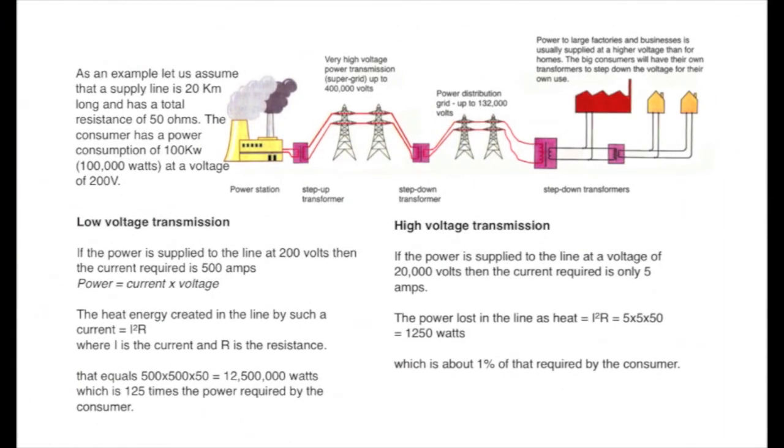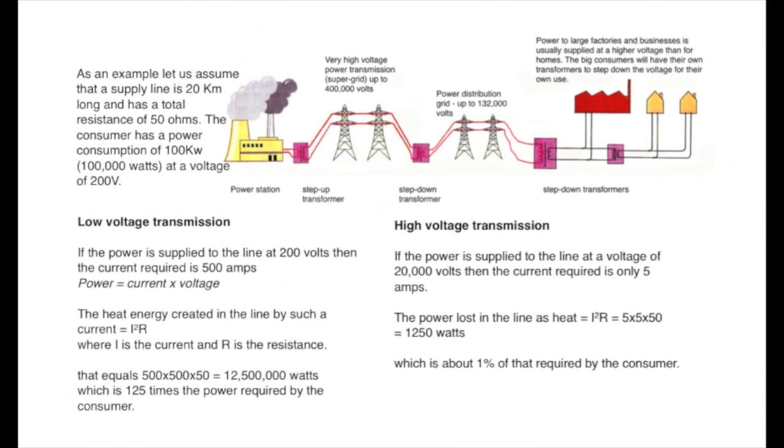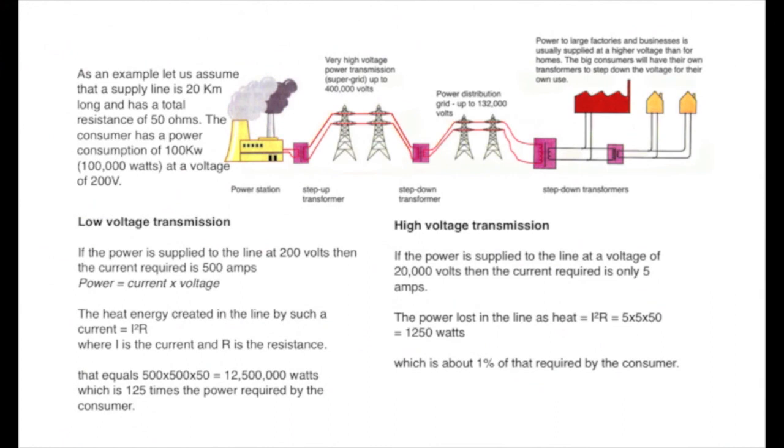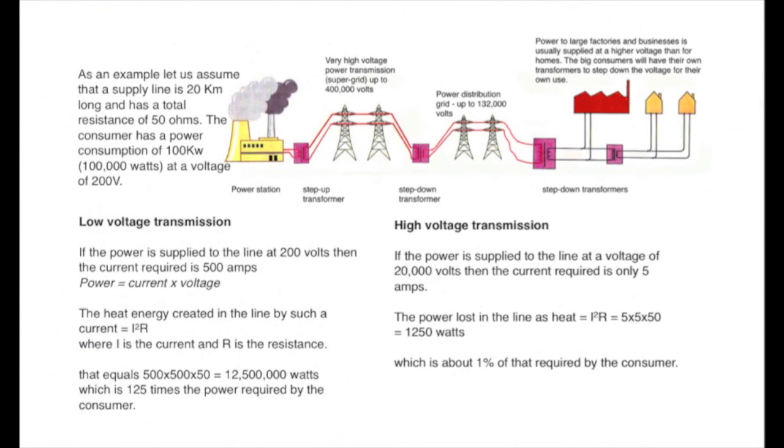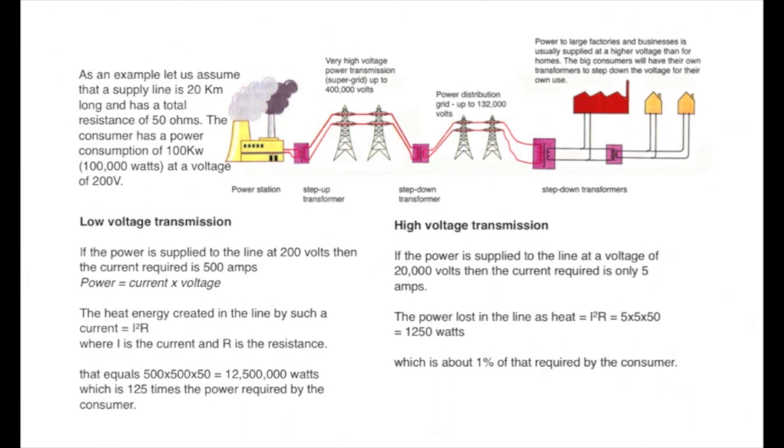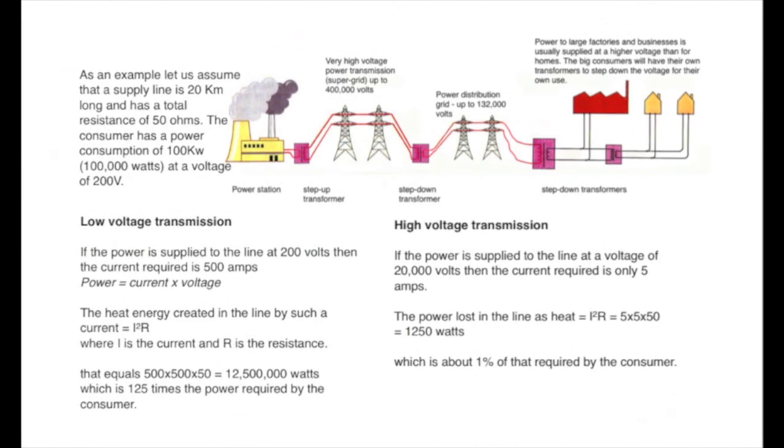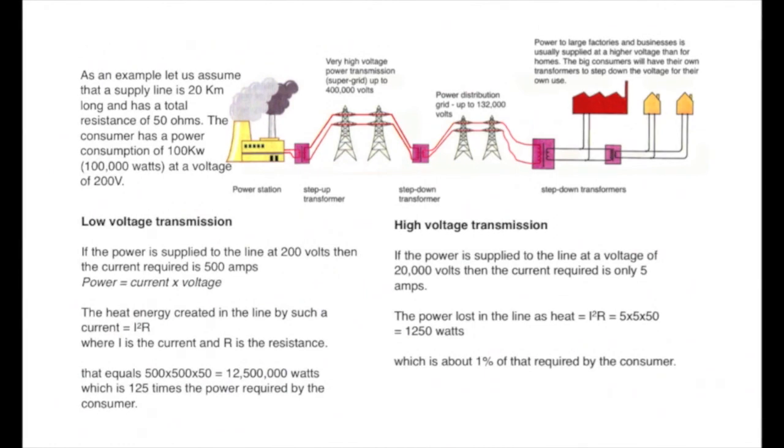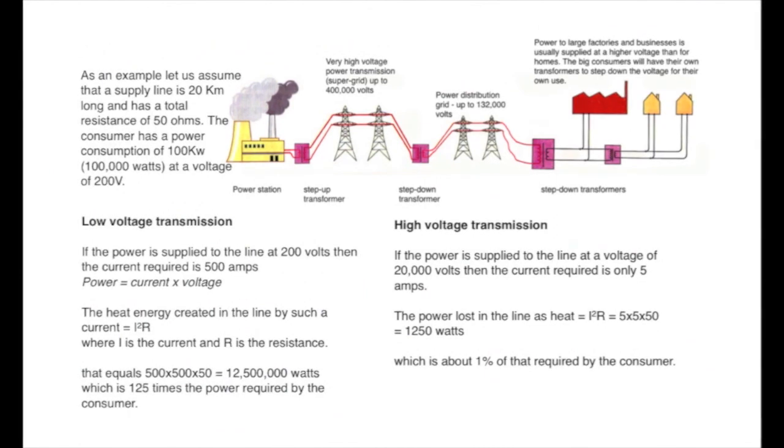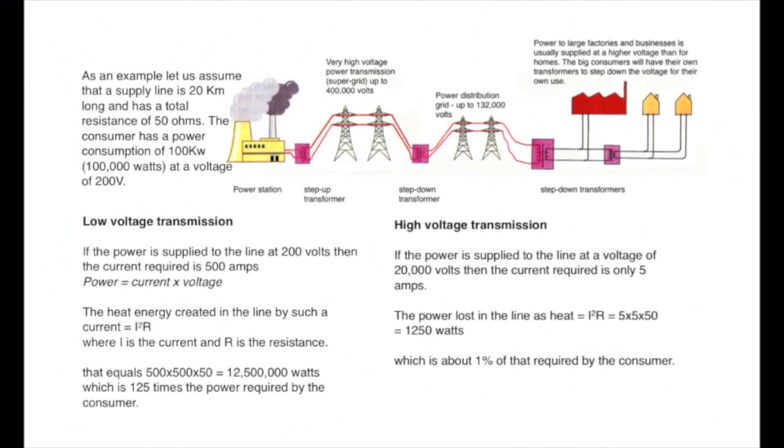Let's consider another option, where a transformer is used to increase the voltage to 20,000 volts. That is 100 times greater, so that the current required is one hundredth of the original. In other words, it is 5 amps. The power lost in the line in this instance, I squared R is 5 squared times 50, which is 1250 watts. A step-down transformer is needed to reduce the voltage for the customer. However, the power loss is only 1% of the total used, a fairly negligible amount.